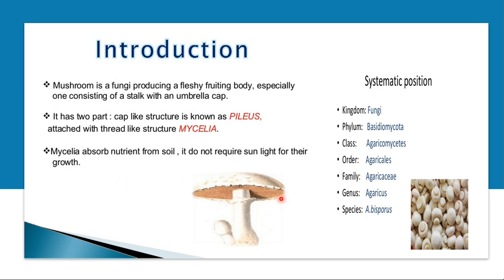Coming to the structure of the mushroom: if you observe here, there is an umbrella-like or cap-like structure, and a long stalk-like structure. This cap or umbrella-like structure is called the pileus, and the stalk-like structure is called the stipe. If it grows in a mat-like form, we call it mycelia. We don't need to go into further detail about the structure for the cultivation topic.